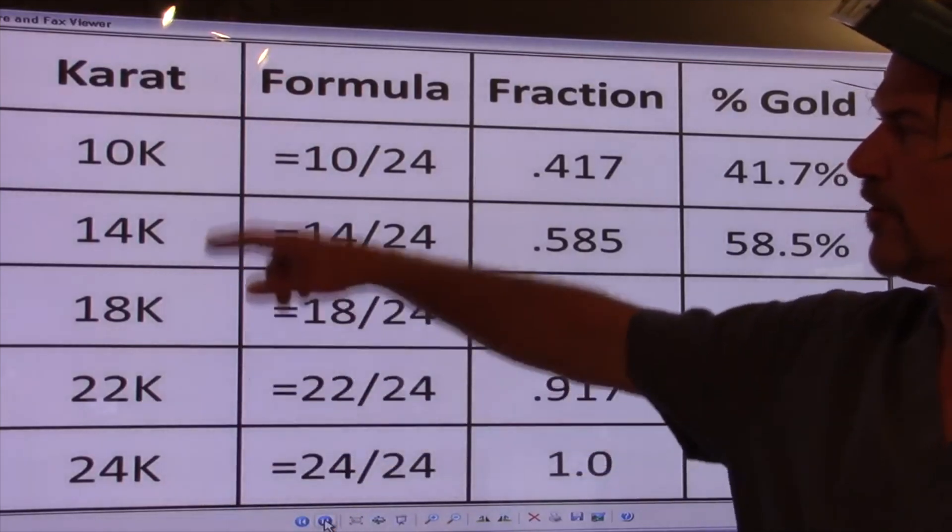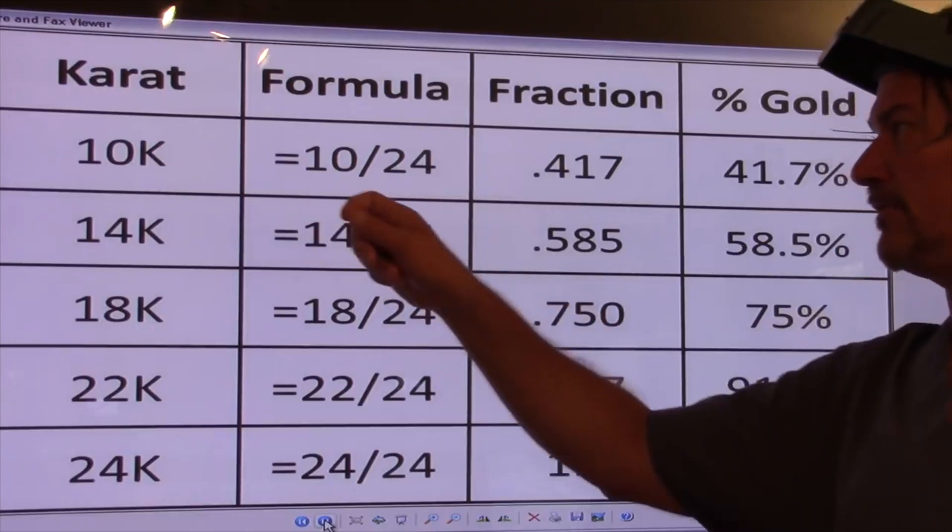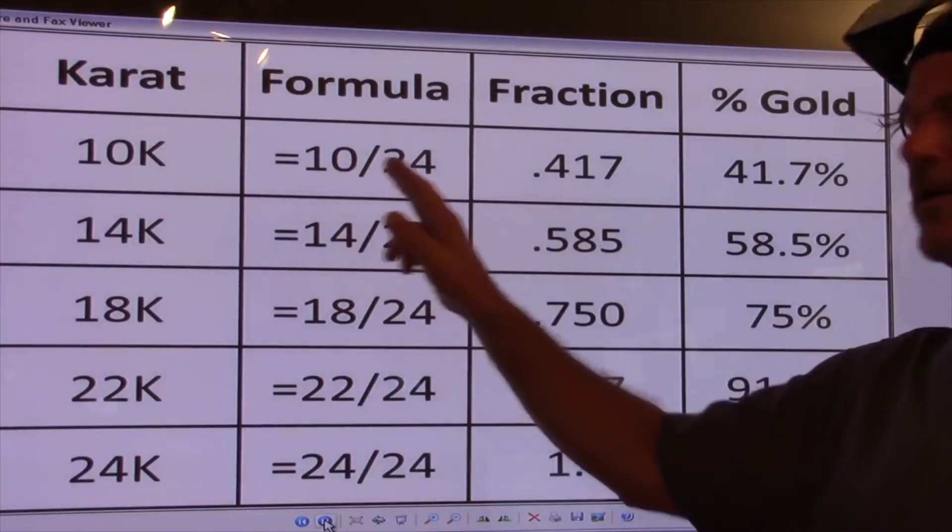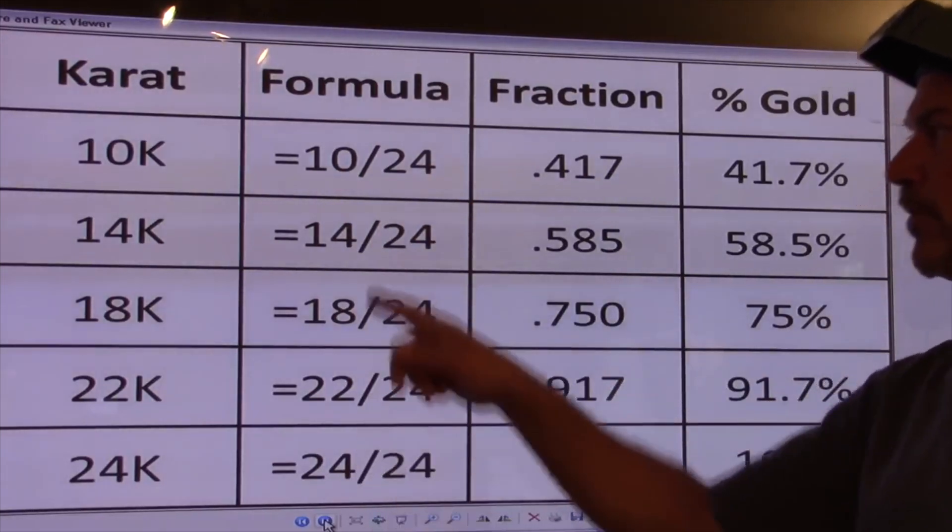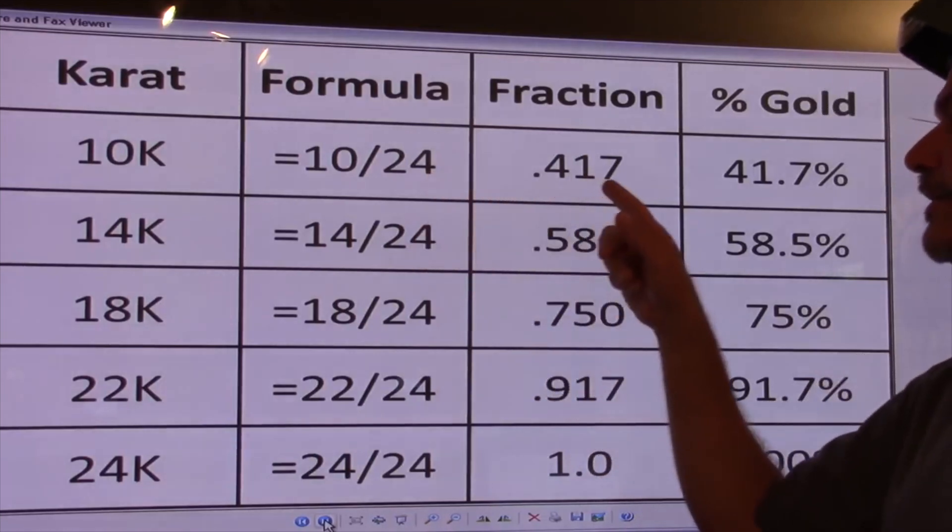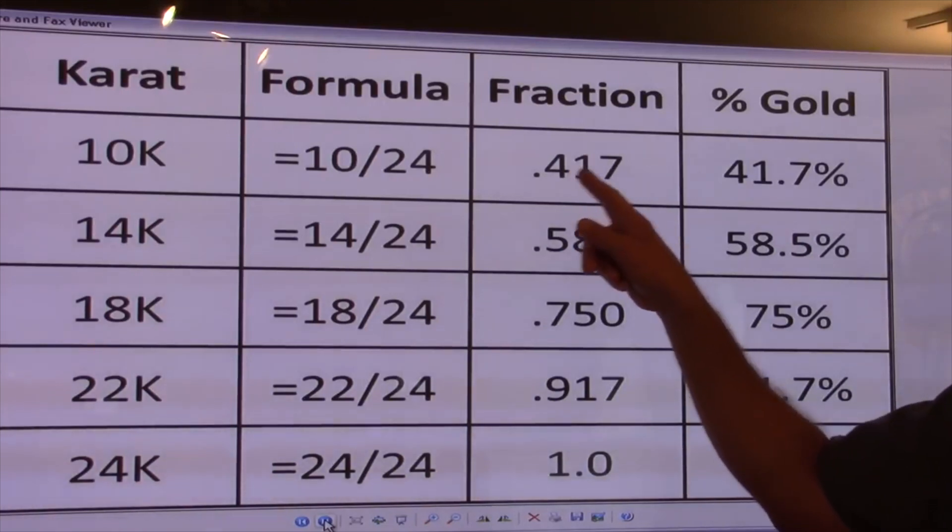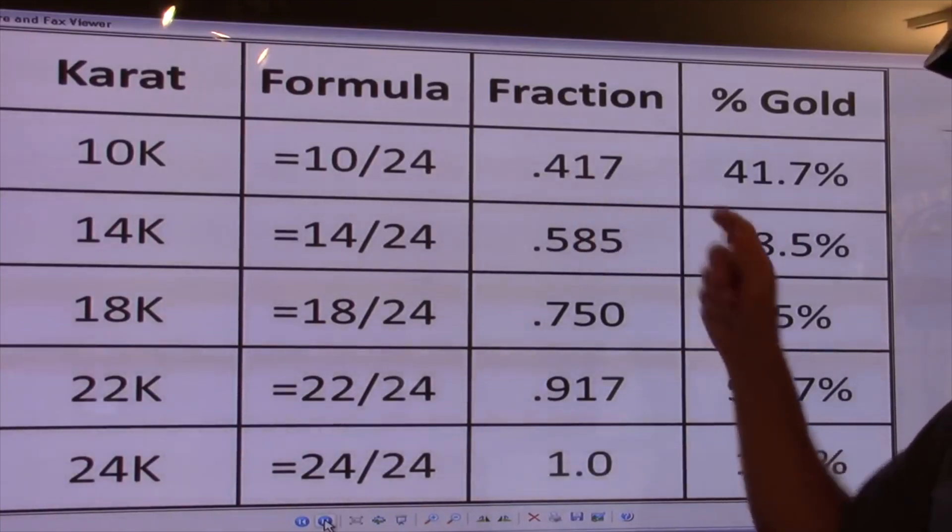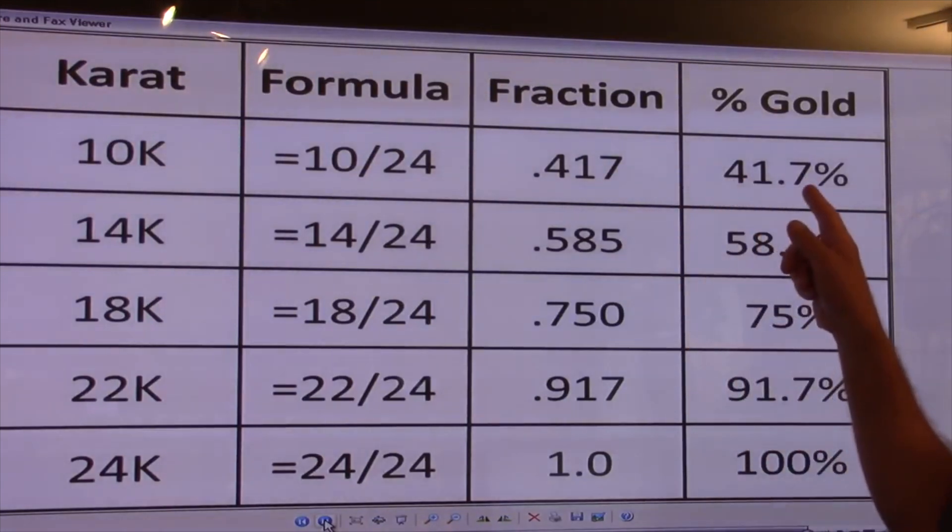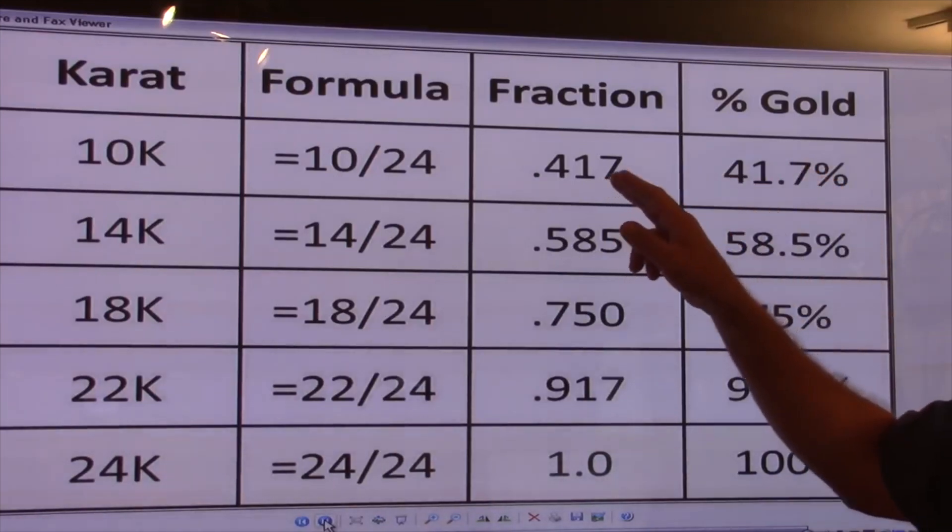Going up the chart here, 10 karat gold should be the cheapest because it's got the least amount of gold in it. It's 10 parts pure of 24, 24 out of 24 being pure. So 10 parts of 24 being pure is 10 karat. This also could be expressed, or you might even see it if the jewel is made in Europe, 417 will actually be on the chain tag or on the inside of the shank, meaning it's 10 karat gold.